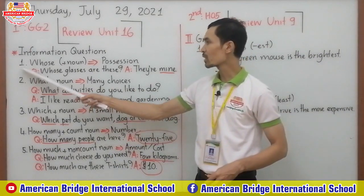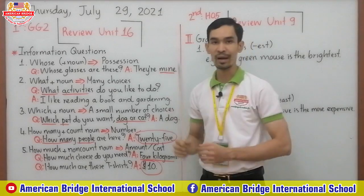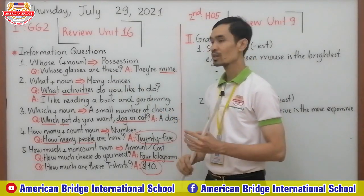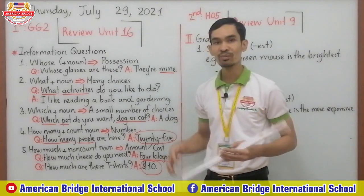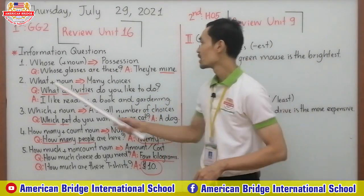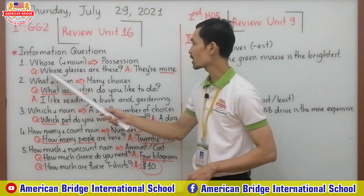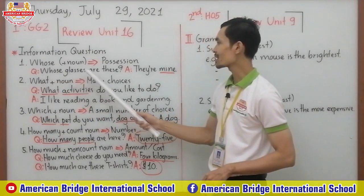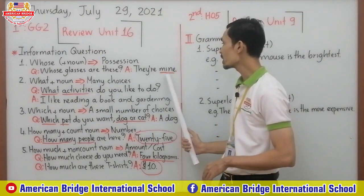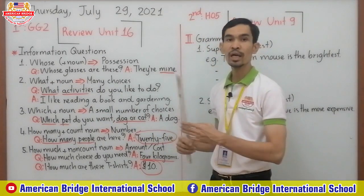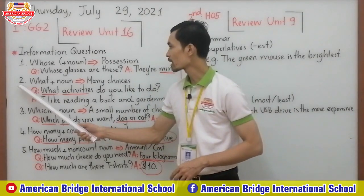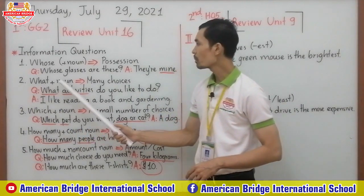Let's start with number one: whose plus noun. It is used to show possession — like the owner. Look at the example: 'Whose glasses are these?' 'They are mine.' So 'mine' here shows possession — it means my glasses.